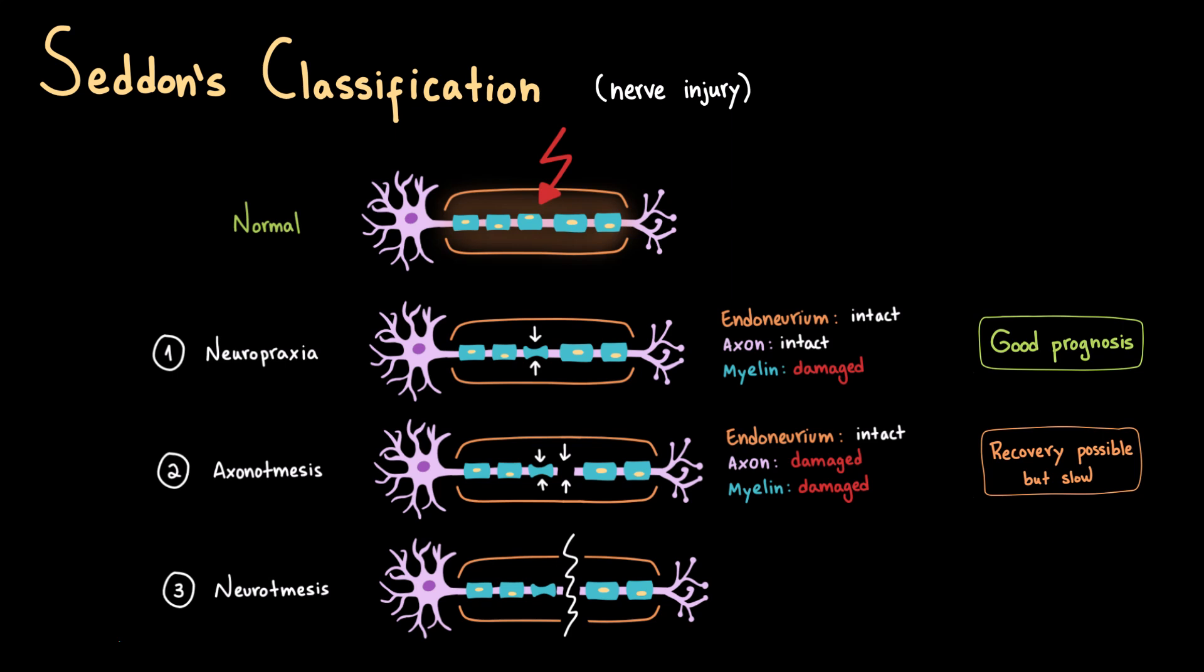Finally, the third level is neurotmesis. This is the most severe form. In neurotmesis, everything is disrupted—the endoneurium, the axon, and myelin are damaged. Essentially, the nerve is completely cut. Without surgical repair, regenerating axons have no path to follow, so recovery is extremely poor. Even with surgery, full recovery is often incomplete, and the prognosis is usually unfavorable.